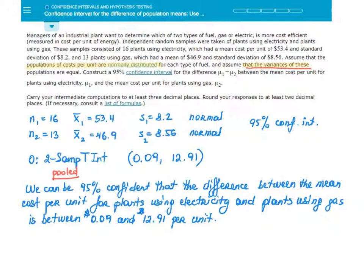All we need to say is just use a calculator two-sample t-interval to produce the interval of 0.09 to 12.91. Therefore, we can be 95% confident that the difference between the mean cost per unit for plants using electricity and plants using gas is between 0.09 dollars and 12.91 dollars per unit.